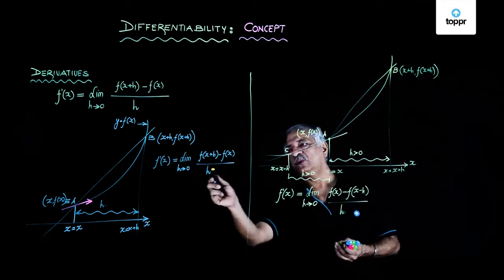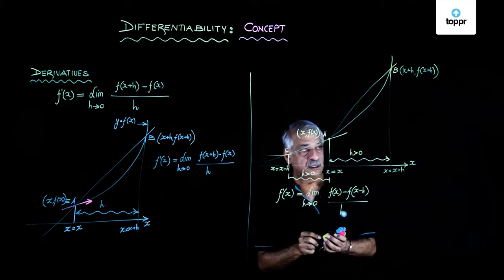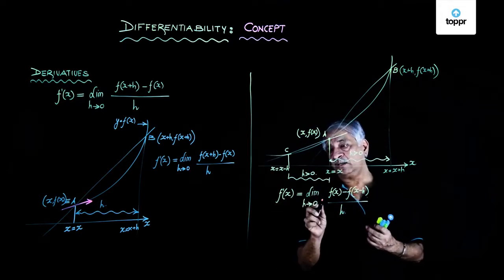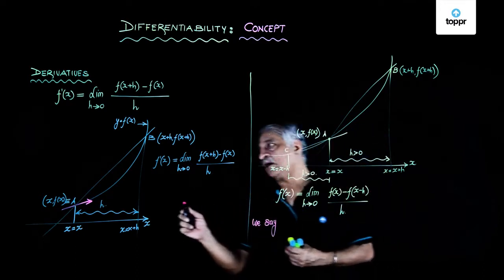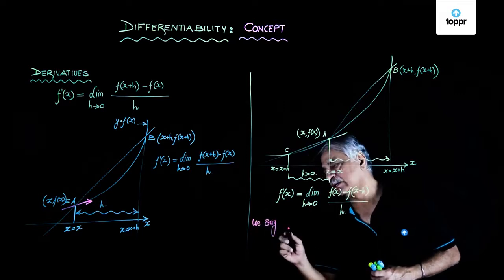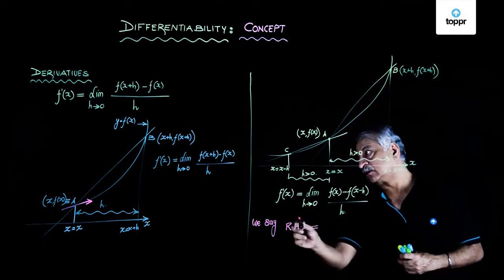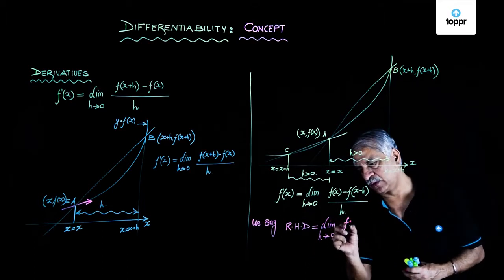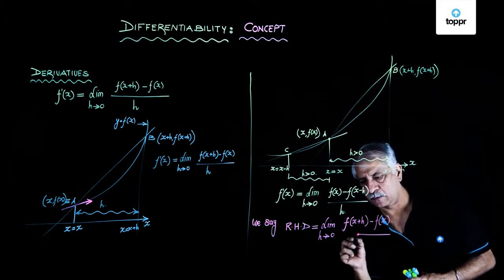Well, now we are having two different relations. I am having two different limits, this and this. So we take a concept of differentiability here that we say when I approach A from B on the right-hand side, then we call this as right-hand derivative. Right-hand derivative is given by limit as h tends to 0, f(x+h) - f(x) upon h.